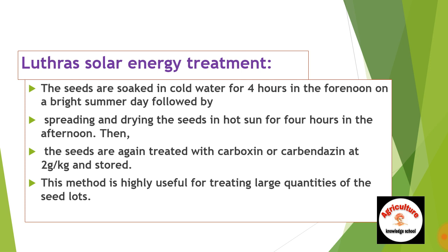Solar heat energy treatment में हम क्या करते हैं: पहले 4 घंटे के लिए ठंडे पानी में बीजों को soak करते हैं। Soak करने के बाद जो ऊपर खराब बीज तैर जाते हैं उनको निकाल देते हैं। फिर वापस 4 घंटे के लिए सूरज की रोशनी में रखते हैं। चार घंटे के बाद वापस fungicide से treatment करते हैं 2 gram per kg seed के हिसाब से। यह method ज़्यादा अधिक seed load जहाँ पर seed की quantity अधिक हो वहाँ use की जाती है।